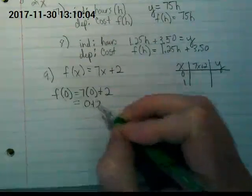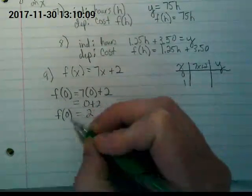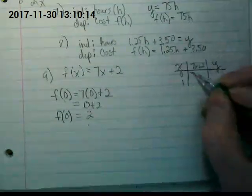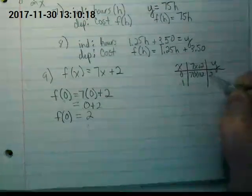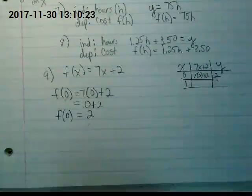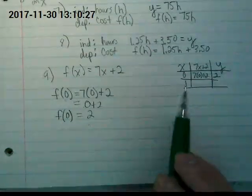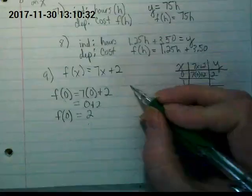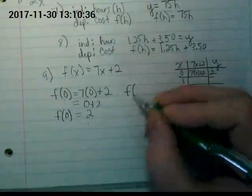When we're using function notation, we have another way we do that. We write when the function is 0, then whenever there's an x in the equation, I'm going to plug a 0 in instead. This is saying when my input is 0, my output is going to be the result of this. What is 7 times 0? 0 plus 2 equals 2. That means when my input of this function is 0, my output is 2.